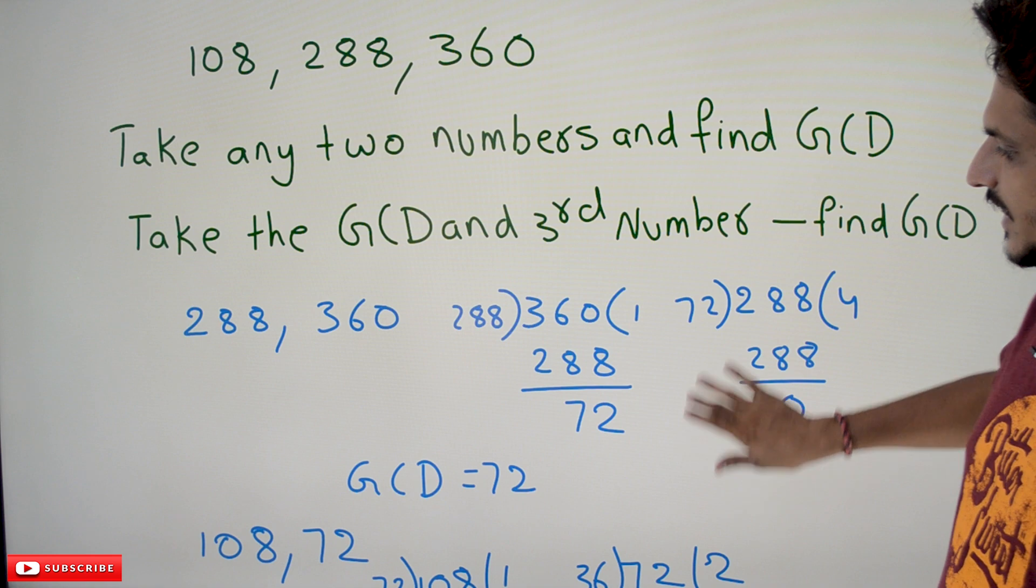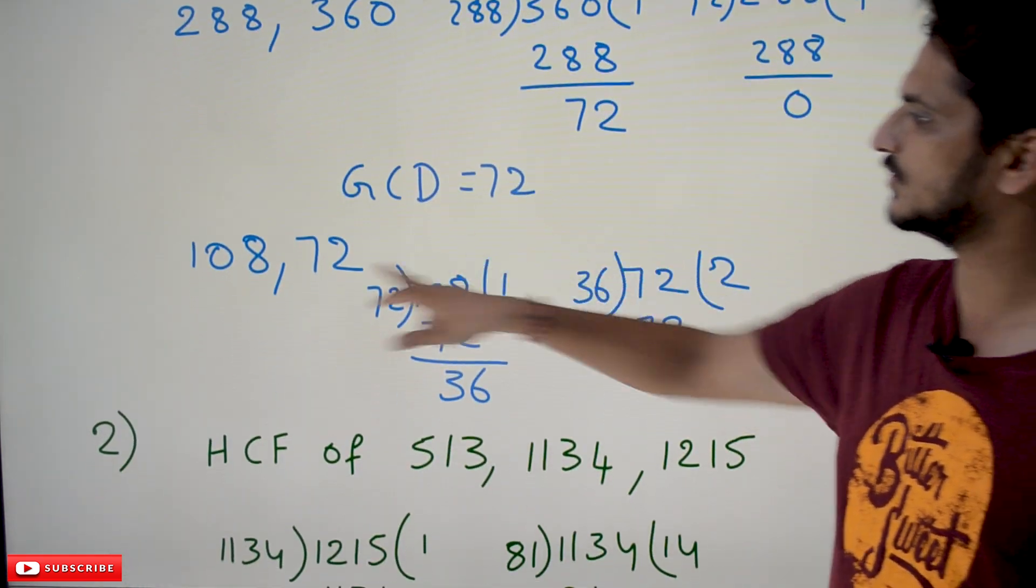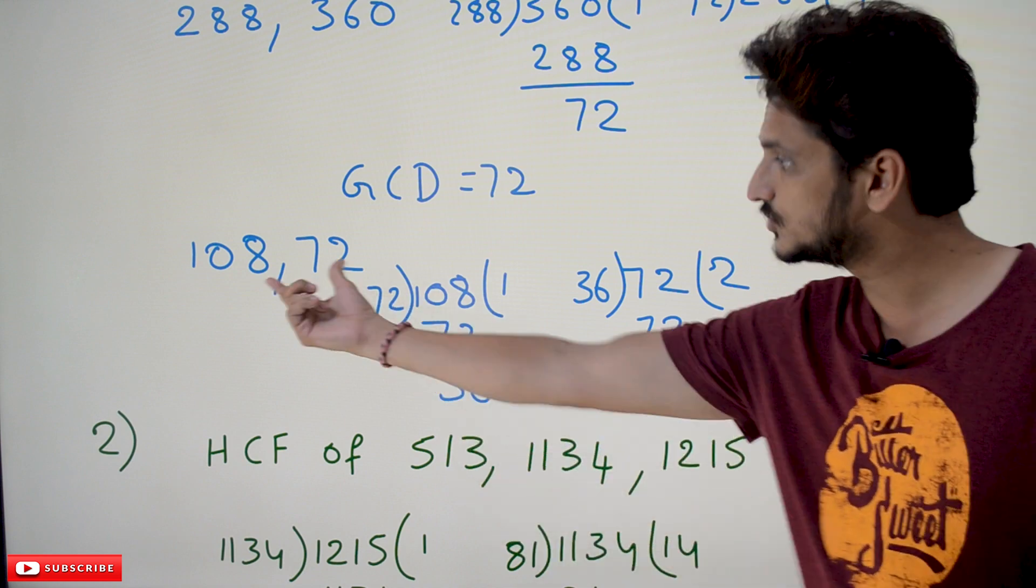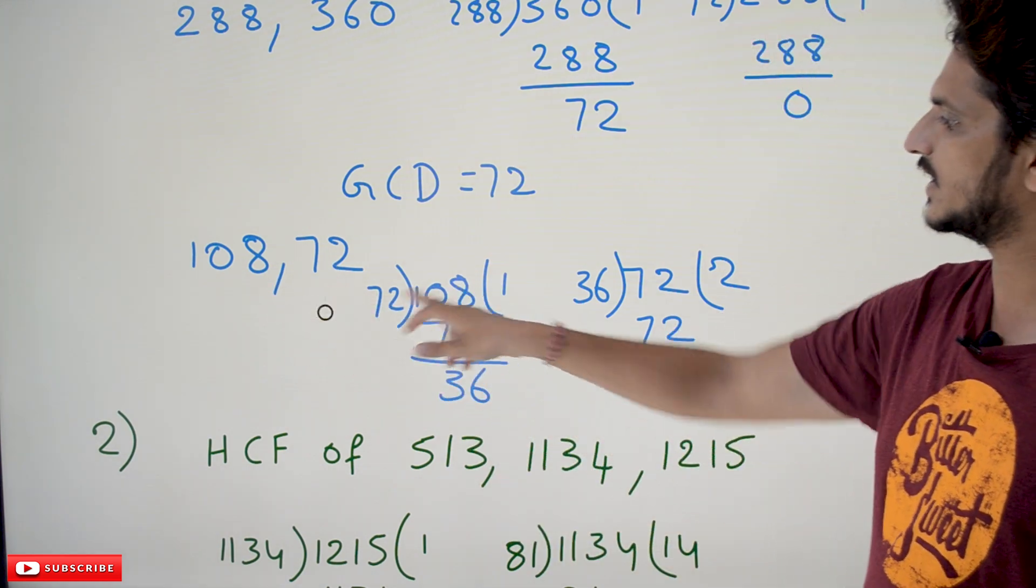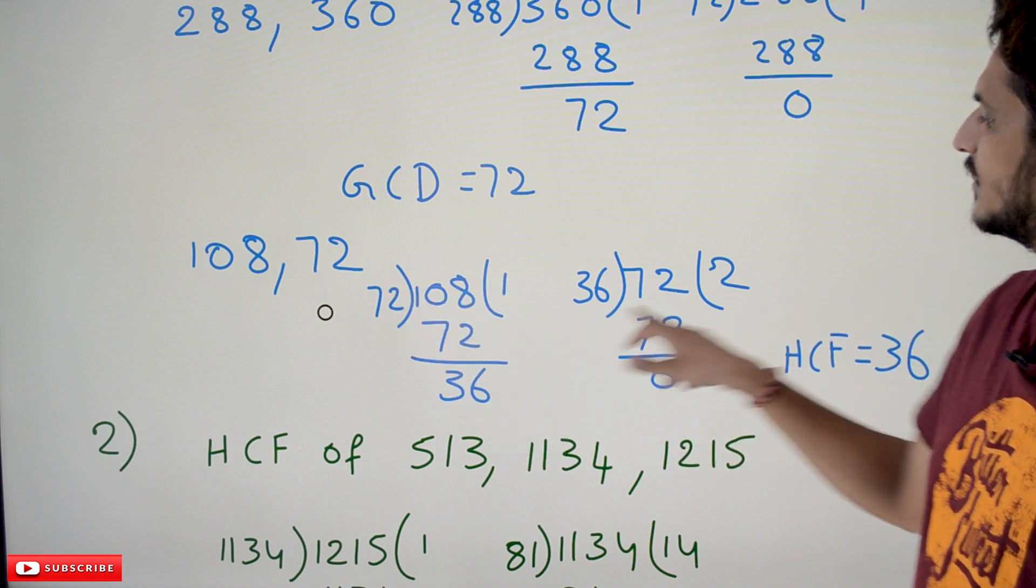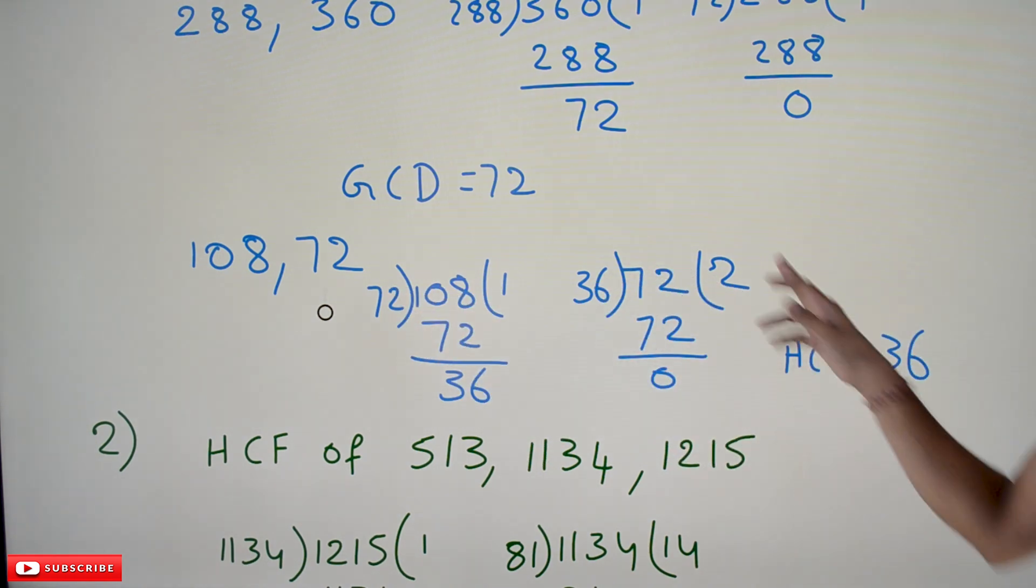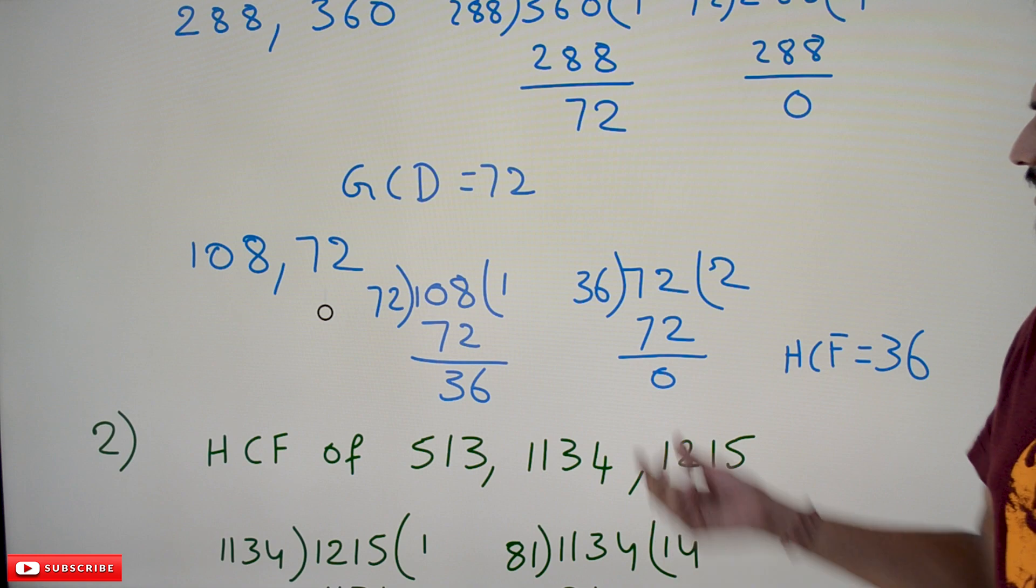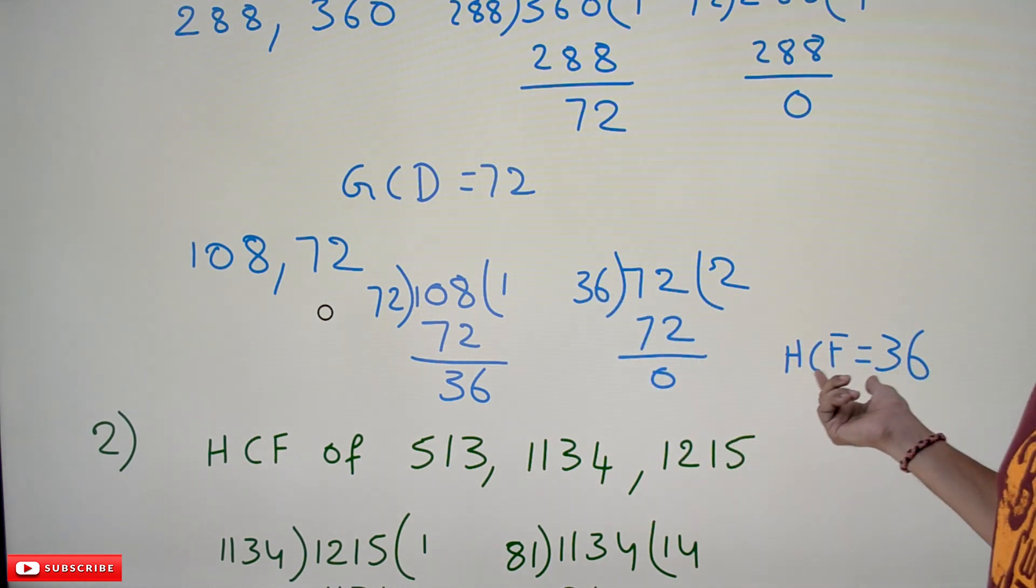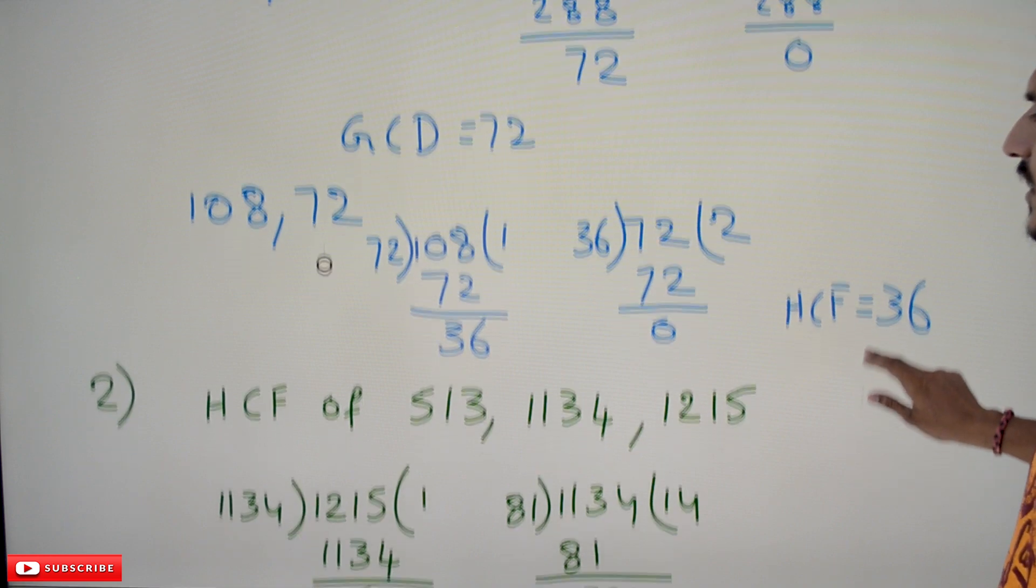Now find the GCD of 108 and 72. 1 times 72 is 72, remainder 36. Again, 72 divided by 36, 2 times 72, remainder 0. So the GCD of these three numbers is 36. The GCD or HCF is equal to 36.